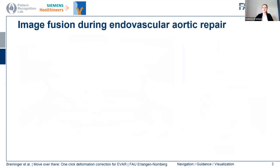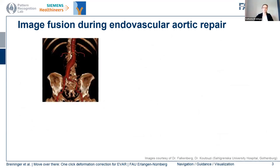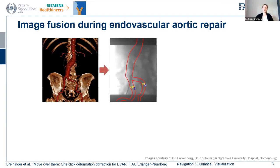We've already seen a nice introduction of what endovascular aortic repair is. Currently, the standard practice is to have a preoperative CT that is segmented and can then be overlaid onto the intraoperative fluoroscopic X-ray images, allowing the preoperative information to be used for guidance. This fusion already reduces the amount of contrast agent, radiation, as well as procedure time.